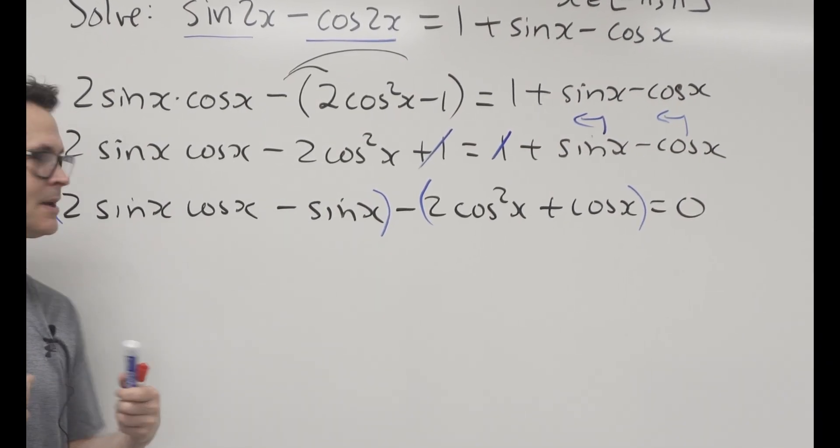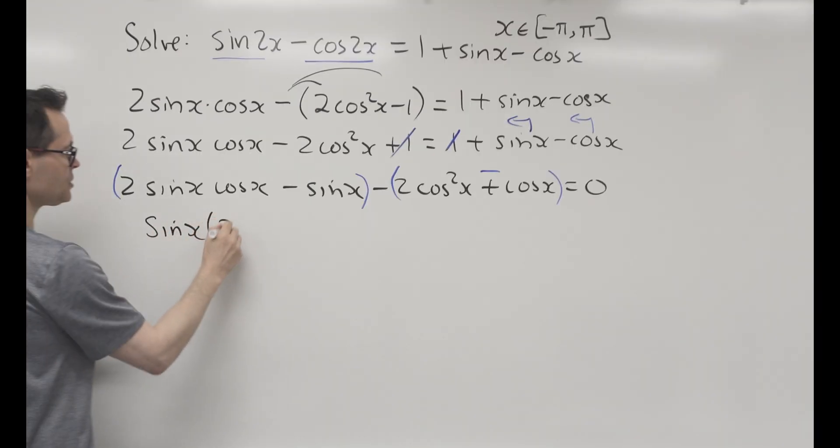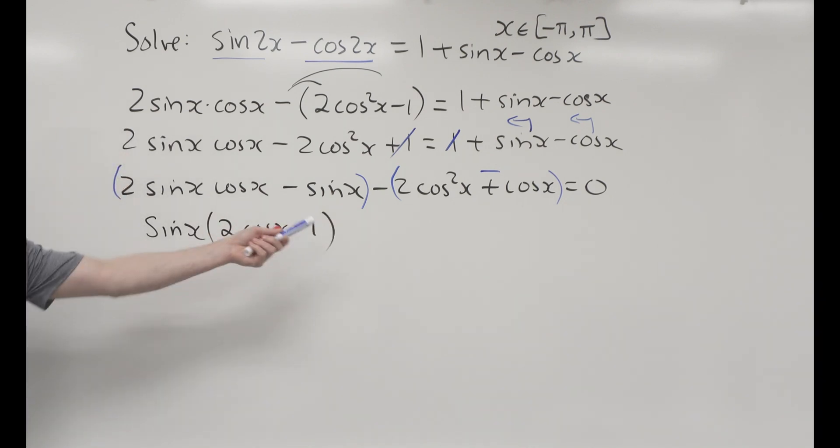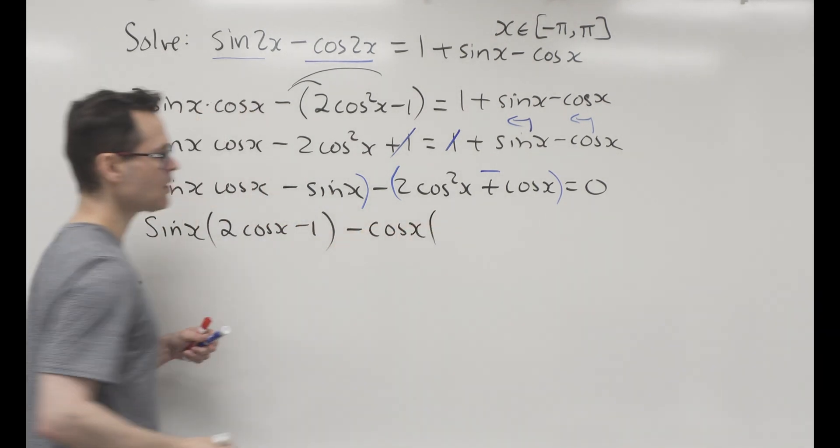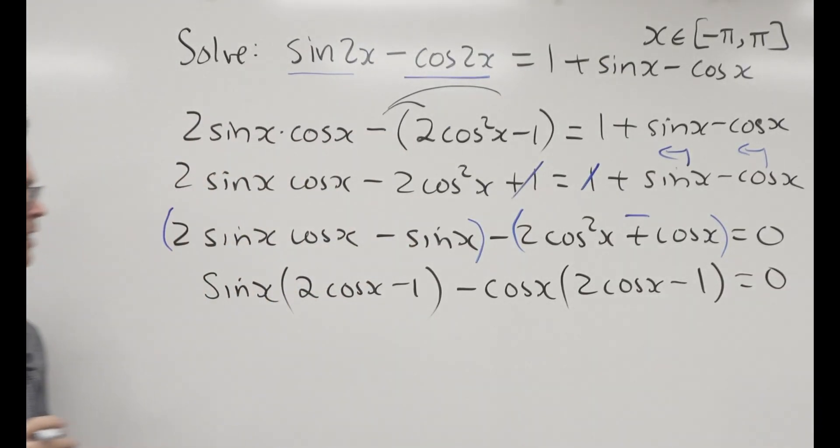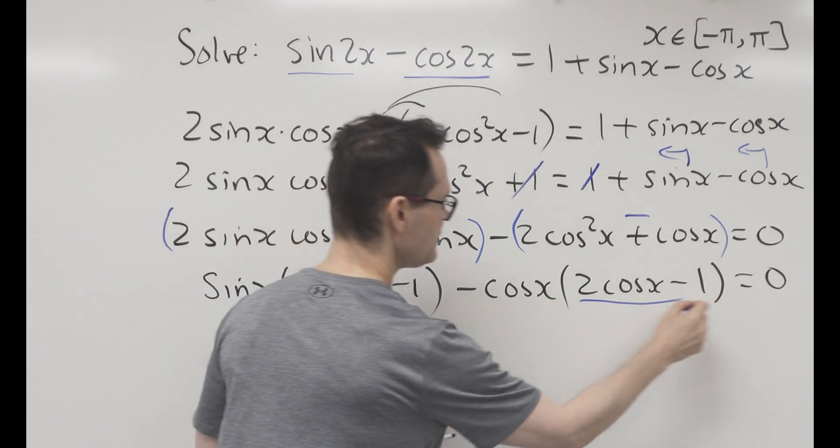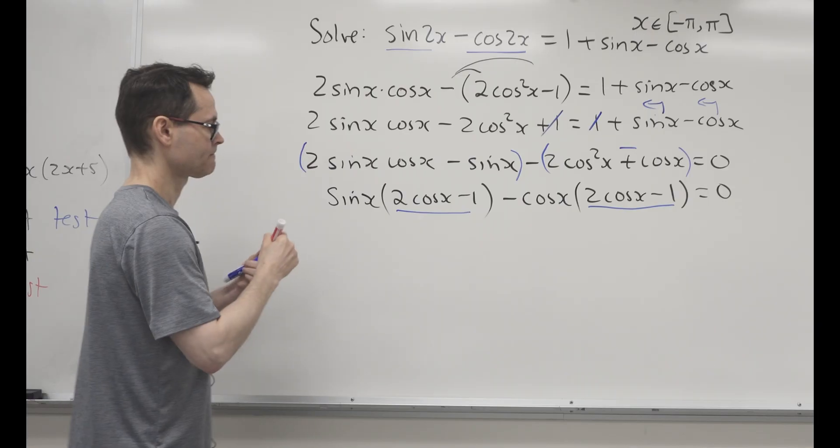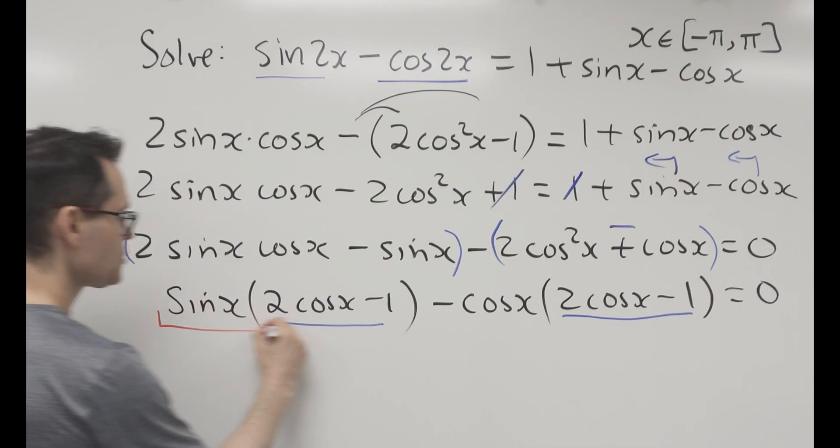So I'm gonna factor it out. That leaves me 2 cos x minus 1. And then this one here, minus cos, take the cos out, you're left with 2 cos x minus 1 equals 0. Well, this was a good choice because look here, this and that are the same. This is one term right here, and that's another term.